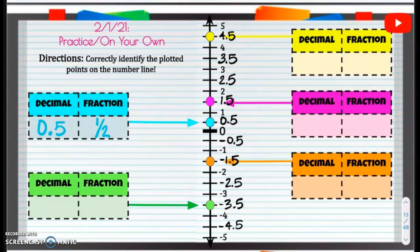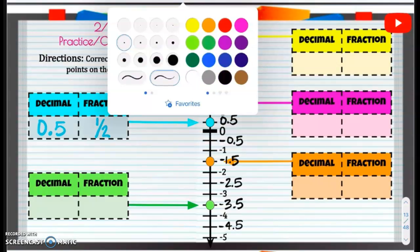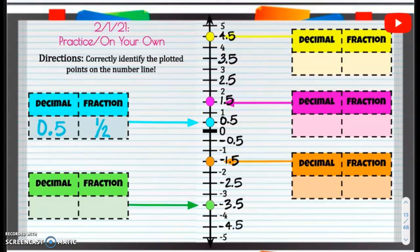All right, next one, the green. We have negative, between negative 3 and negative 4 is going to be negative 3 and 1 half. So that decimal is negative 3 and 5 tenths, or negative 3.5. That fraction is going to be negative 3 and 1 half. Negative 3 and 1 half.